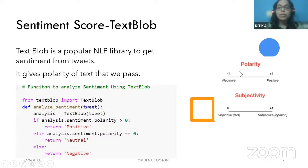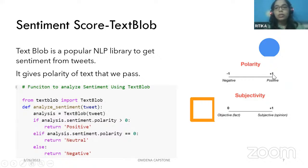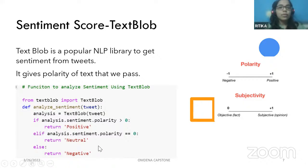If we have a polarity value of zero, that means the text is neutral. If polarity is greater than zero, we consider it trending towards positive — the closer to plus one, the higher the degree of positivity. The more it is towards negative minus one, the more it is inclined towards negative sentiment. We can write one custom function for analyzing the tweets and getting positive, neutral, and negative sentiments.